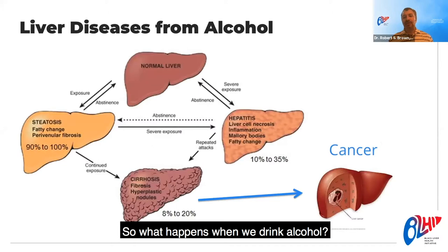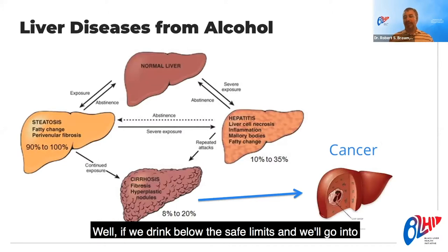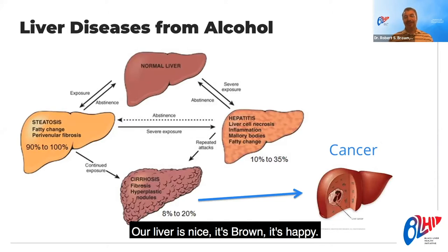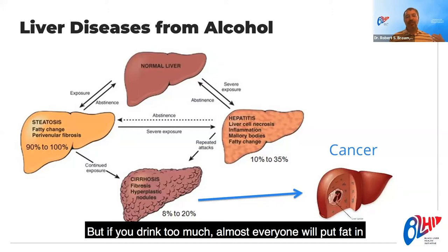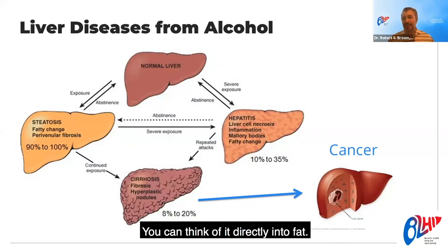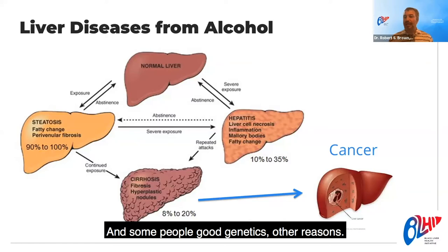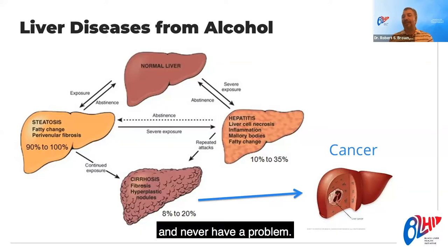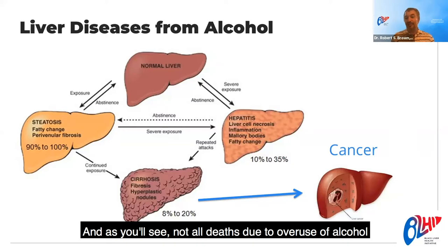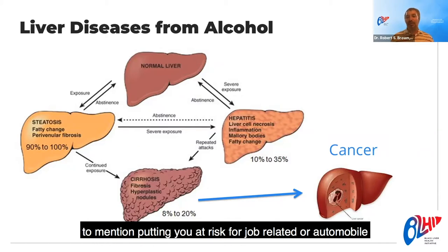What happens when we drink alcohol? If we drink below safe limits, we maintain a normal liver. But if you drink too much, almost everyone will put fat in the liver — the alcohol gets metabolized directly into fat. Some people with good genetics can live with a little fat in their liver and never have a problem. Not all deaths due to overuse of alcohol are from liver disease — it affects your whole body, and puts you at risk for job-related or automobile-related accidents.